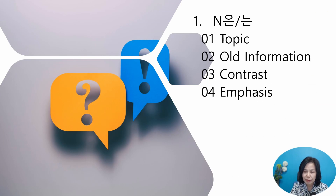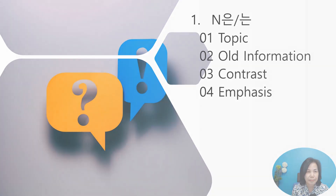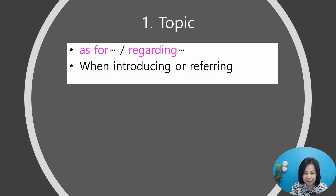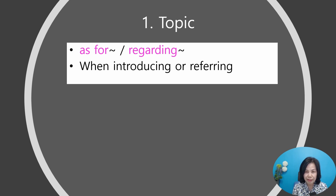There are four usages of 은/는: topic, all the information, contrast, and emphasis. First, topic. 은/는 is added after a noun to indicate that the noun is the topic, issue, or main idea of that sentence. It means the same as 'as for' or 'regarding' in English. That's why it's mainly used when introducing yourself or referring to things.